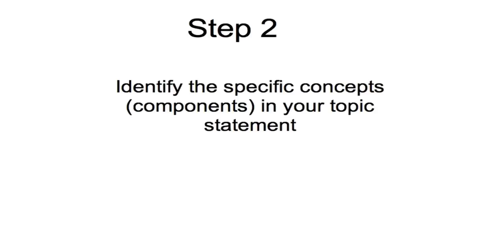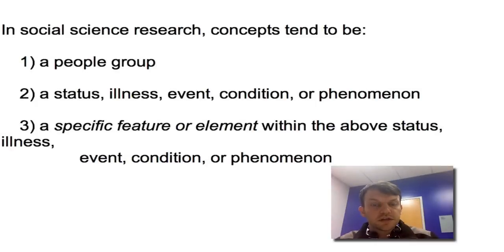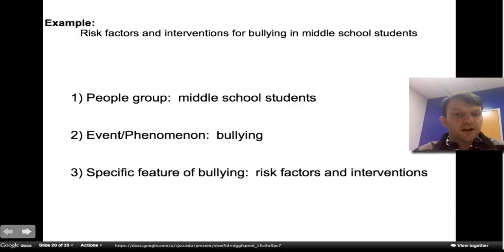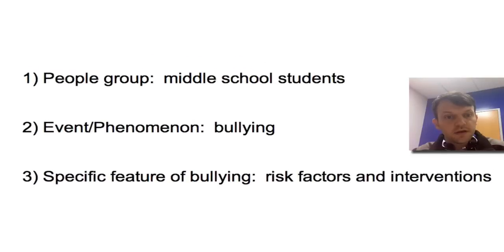Step 2: Identify the specific concepts or components in your topic statement. Now that you have a direction for your research, identify the concepts or subjects of your topic. In social science research, concepts tend to be: 1) a group of people, 2) a status, illness, event, condition, or phenomenon, or 3) a specific feature or element within the above status, illness, event, condition, or phenomenon. Using our example of risk factors and interventions for bullying in middle school students, we can identify each of these components. Our people group would be middle school students. The event or phenomenon that we're focusing on is bullying, and the specific feature of bullying that we're focusing on is risk factors and interventions.